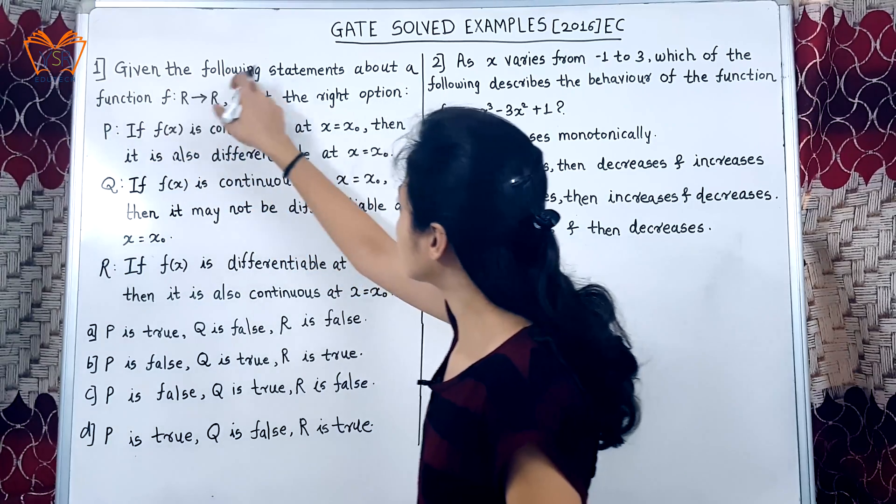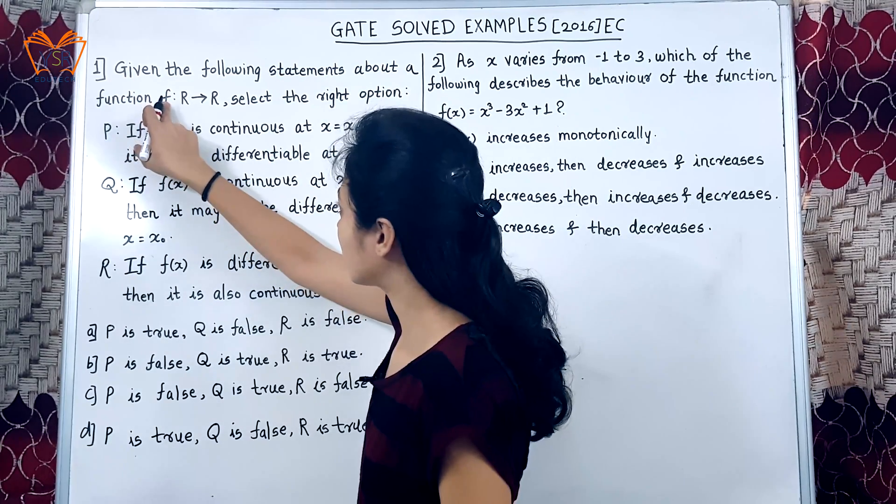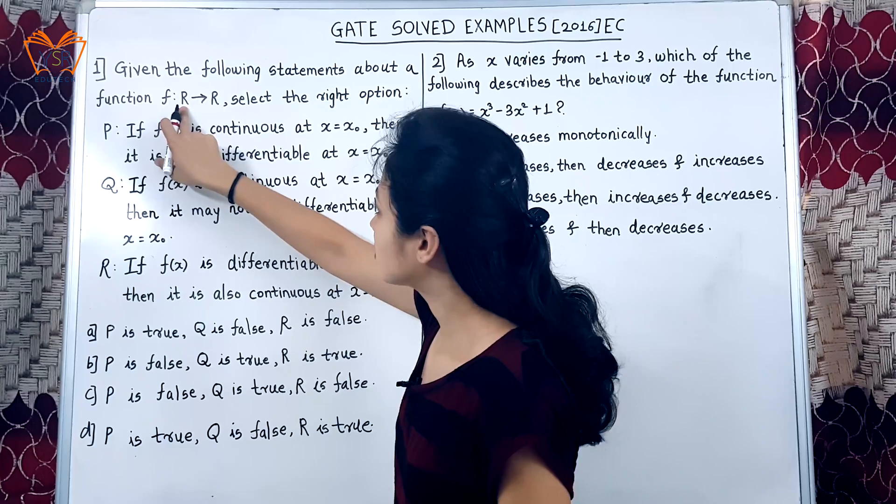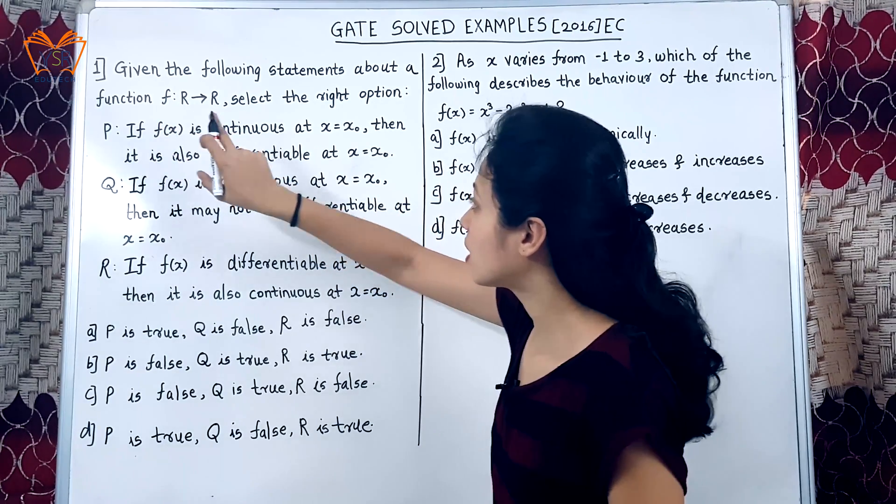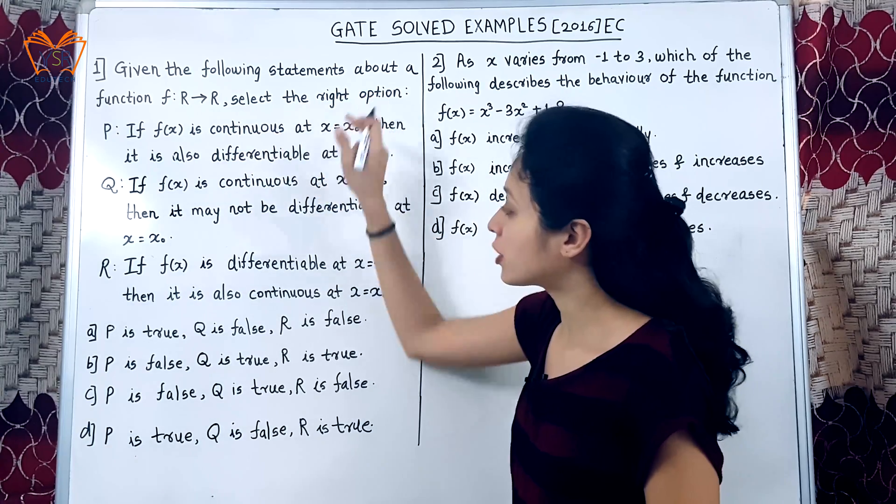we will see the examples asked in GATE for EC in the year 2016. First example, given the following statements about function f, this indicates domain and this indicates co-domain. Domain consists of input values, co-domain consists of output values.